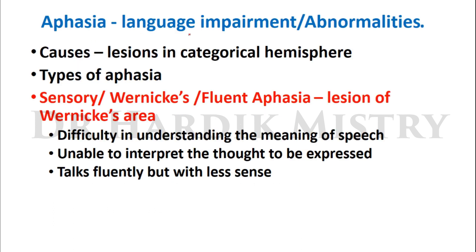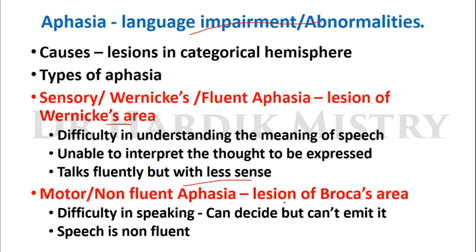Aphasia refers to language impairment caused by lesions in the dominant hemisphere. There are two major types: sensory aphasia and motor aphasia. Sensory aphasia, also called Wernicke's aphasia or fluent aphasia, occurs with lesions of the Wernicke's area. Abnormalities include difficulty understanding the meaning of speech, inability to interpret thoughts to be expressed, and the patient talks frequently but with less sense.